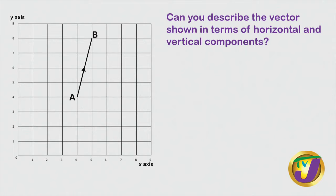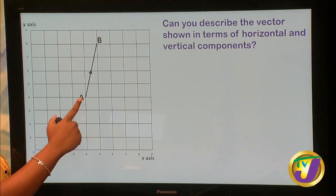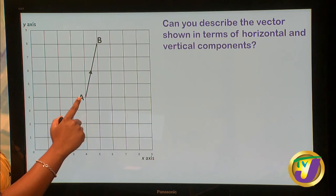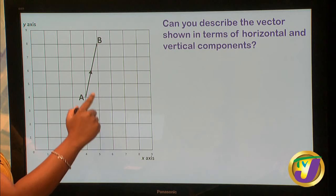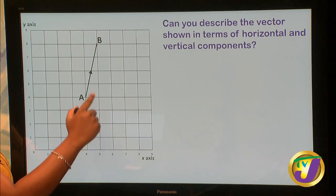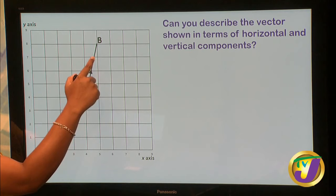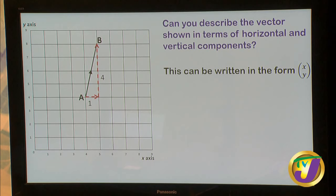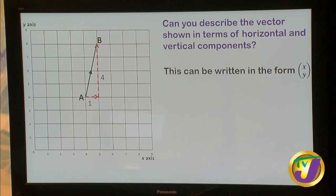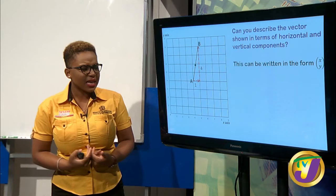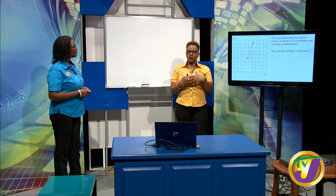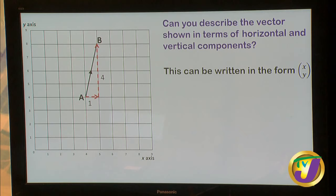Can you describe the vector in terms of horizontal and vertical components? Moving from A, there's a horizontal movement of one unit, then going up — a vertical movement of four units. So horizontal component is one, vertical component is four. The vector can be written in the form XY, where X represents horizontal movement parallel to the x-axis, and Y represents vertical movement parallel to the y-axis.